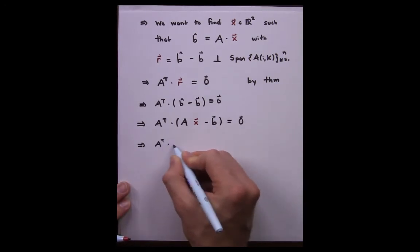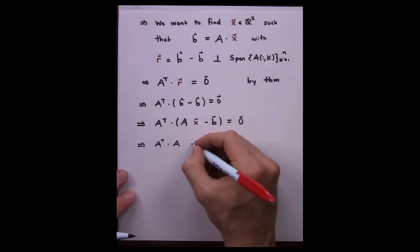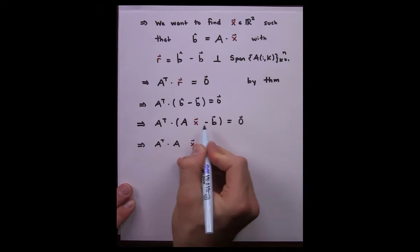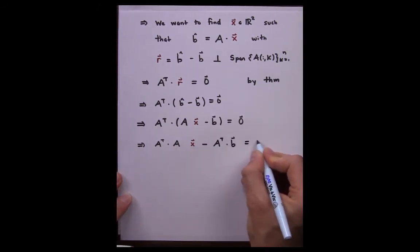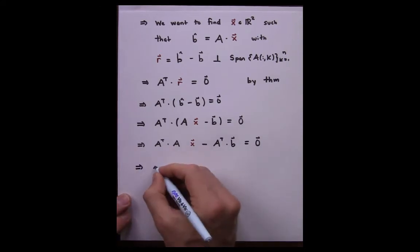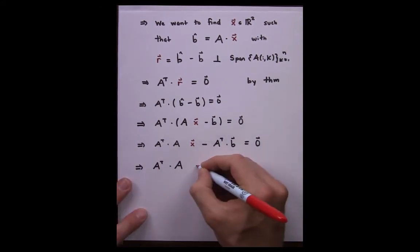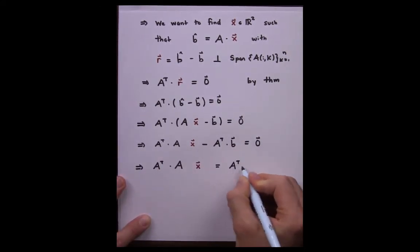We then use distributivity of matrix multiplication over vector subtraction to distribute A transpose through the subtraction. We can bring the A transpose B over to the other side of the equal sign.